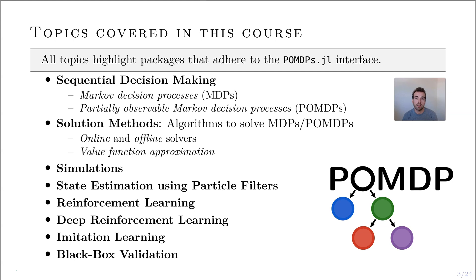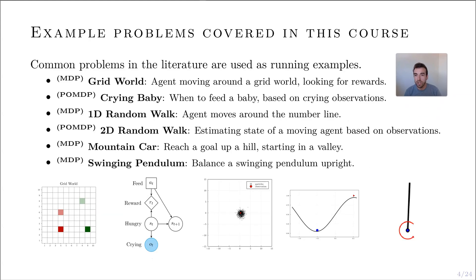I'll also talk about imitation learning, which is learning from expert demonstrations. And lastly, black box validation — how do we stress test a system where we can only get the inputs and outputs in some dynamic environment. Because this course is led by example, there are some common problems from the formal literature that I introduce here, both to give you an idea of the spread of application and to help you frame your own problems.